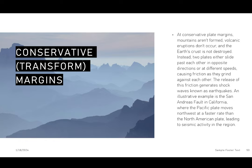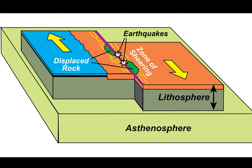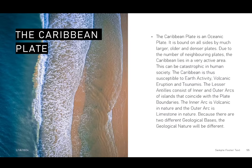Conservative or transform plate margins are notably associated with earthquakes. They occur when plates move past each other, creating a shearing zone with huge impacts as plates move and release stress within the earth's crust. The lithosphere moves and glides over the asthenosphere. You don't need to distinguish every geological sphere — just understand generally what's happening.